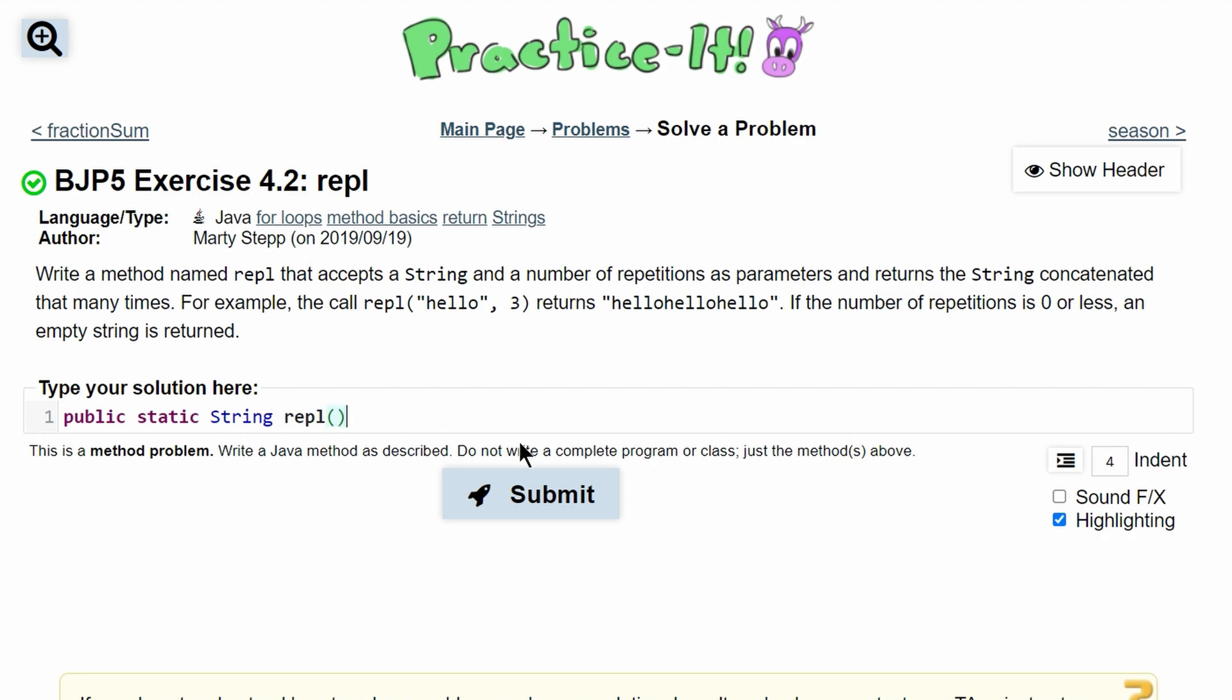and then we're going to take our parameters. Our first parameter is a string—it says right here—we'll call it word. And then we want to take a number of repetitions. We'll do int n for number.